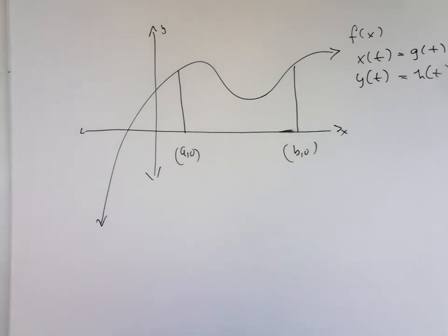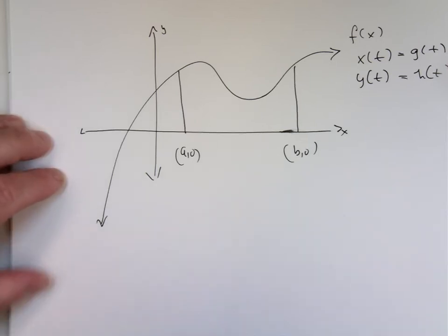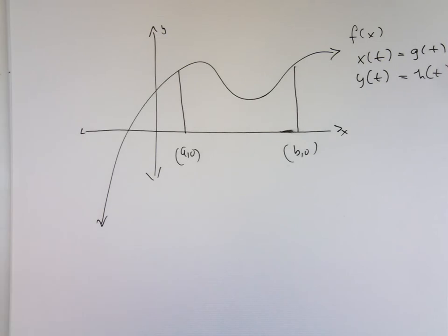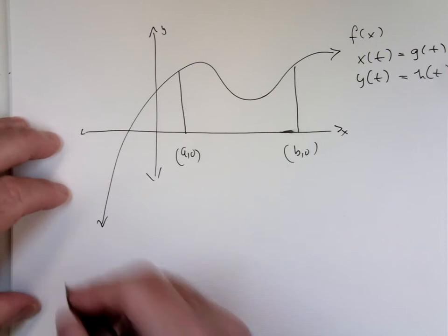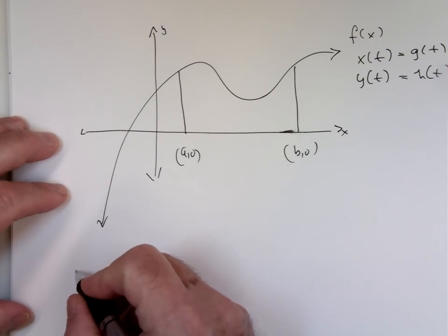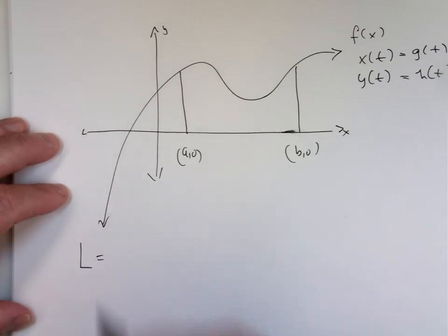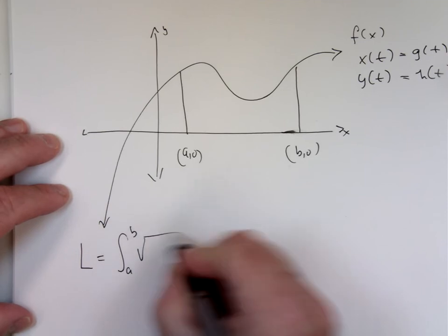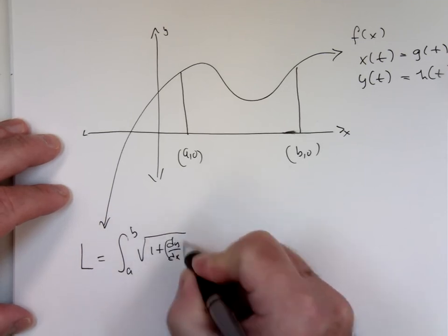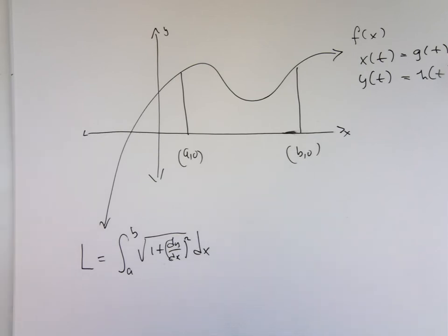It's a derivative squared — something plus a derivative squared underneath the square root. That's right. Here's the formula: the integral from A to B of the square root of 1 plus the derivative squared, dx. That's arc length when Y is given in terms of X. And we derived that in Calc 2. Now we have X and Y defined in terms of some parameter T — we're going to derive the arc length for this parametrically defined function.